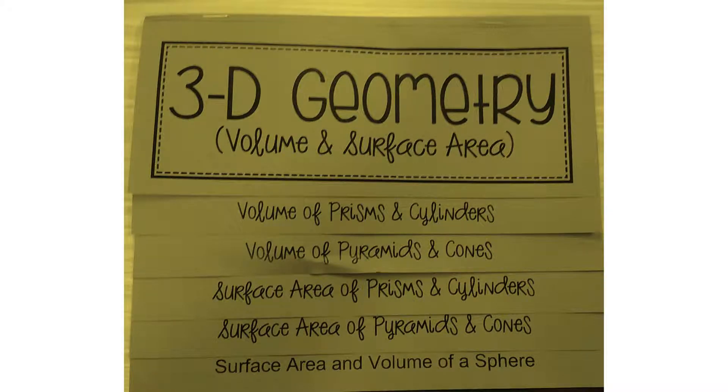So this is our foldable. It's 3D geometry, volume, and surface area. We're going to be talking about pyramids. We're going to be in this flap first for a couple examples, and then we'll be in the surface area of pyramids flap for a couple examples. So we're going to be bouncing between, it's not back-to-back, tabs or flaps. So just make sure you are in the correct tab when you are writing down the formulas and these problems.